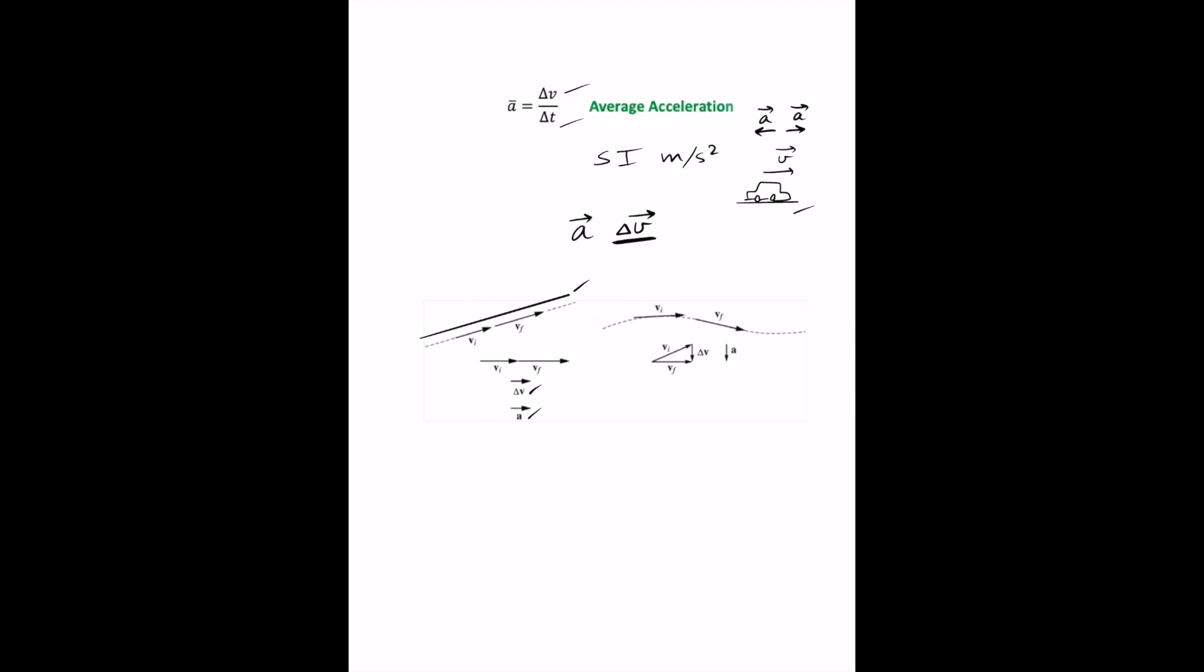For motion along a curved path with a constant speed, a is perpendicular to v at each point along the path. And if the velocity is changing both magnitude and direction, then a will be directed at some angle to v.